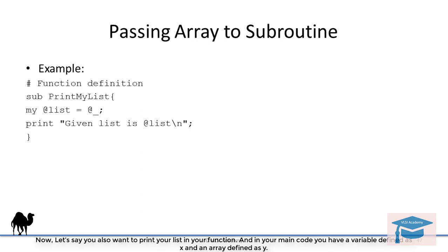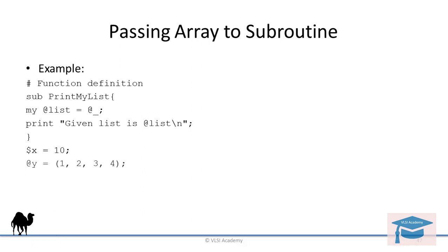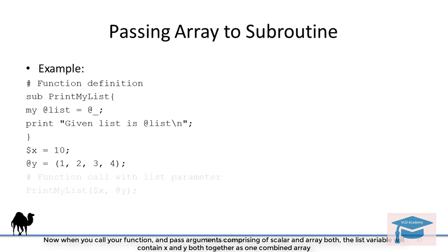And now in your main code you have variables, let's say x and y. So x is a scalar and y is an array. Now when you call your function and pass the arguments comprising of these, you have a scalar here and these two.